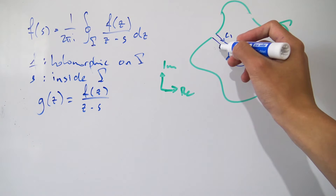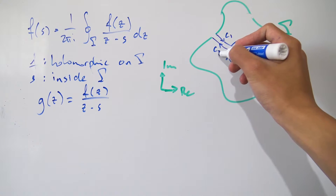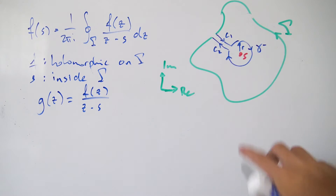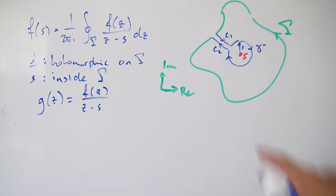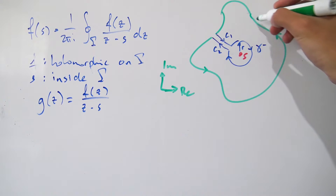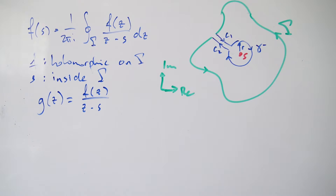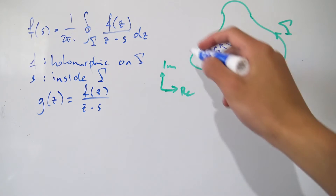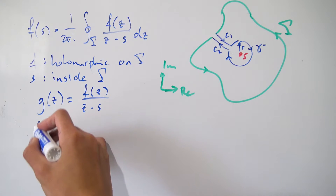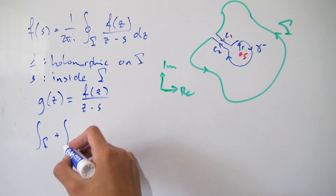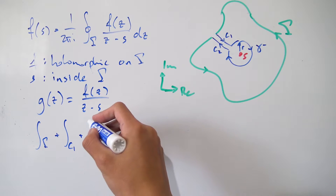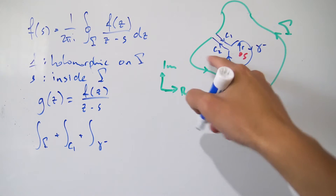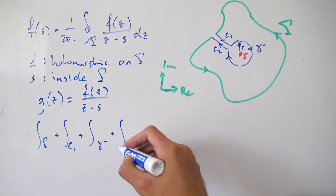We enter the little circle path, but since we're going in the negative direction I'll call it gamma-negative. Then once we come out we go back along path c2. Notice c1 and c2 are very close to each other — later we'll take the limit as they converge. After leaving c2 we continue back along gamma to where we started. So this new path can be written as the integral along gamma, plus c1, plus gamma-negative, plus c2.